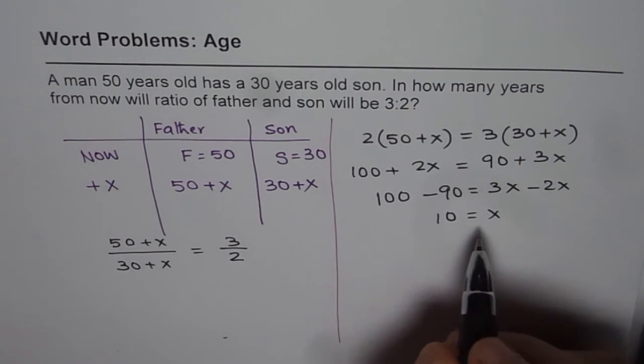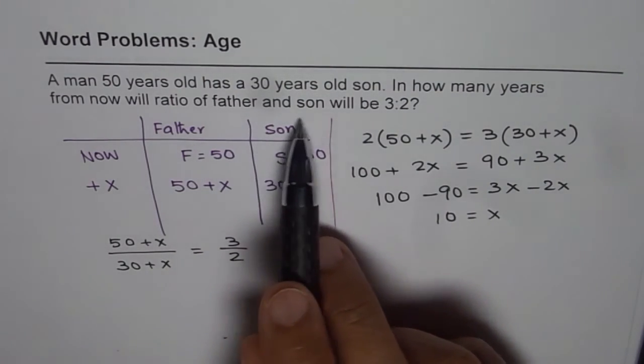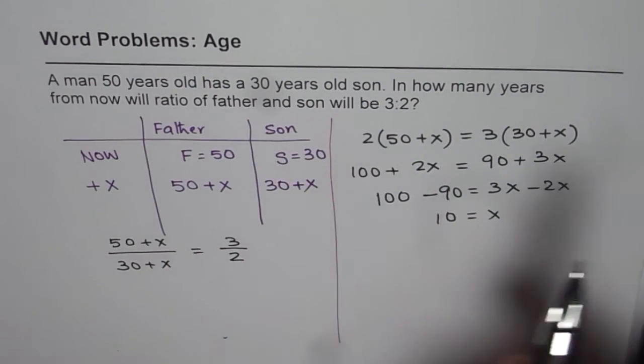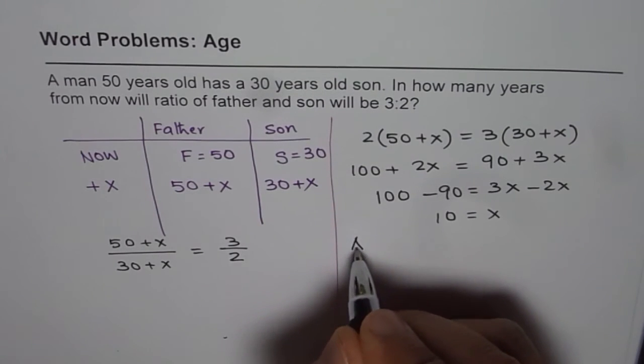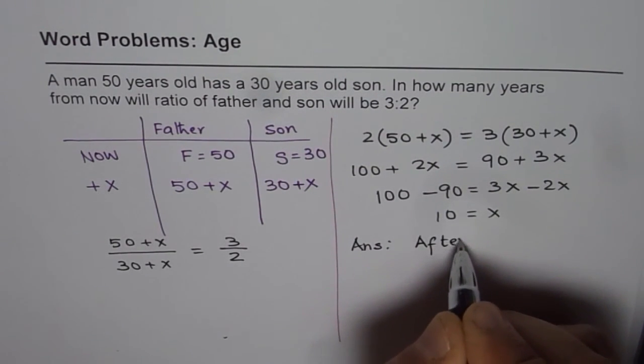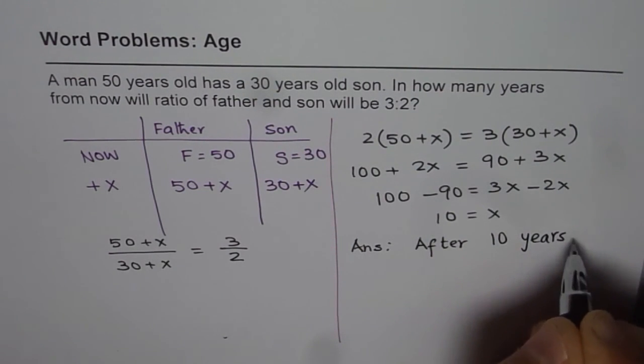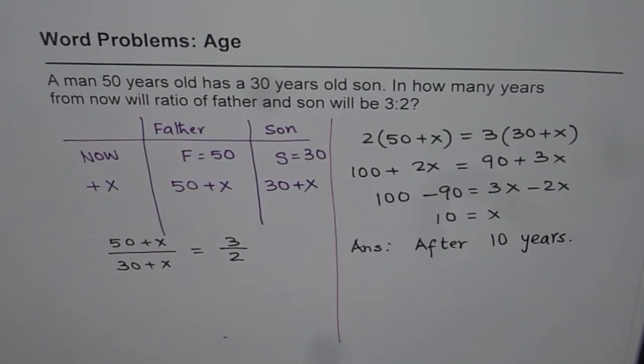So after 10 years, the ratio of father and son will be 3 to 2. That is our answer: after 10 years. That is how we can solve such questions. Thank you.